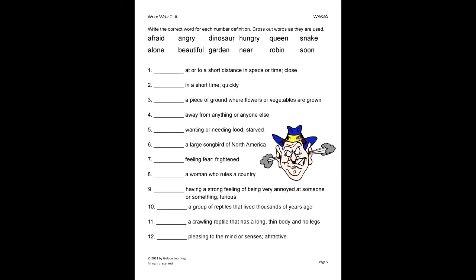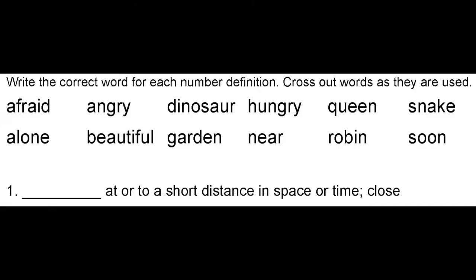On this activity, the student will write the correct word for each number definition. Cross out words as they are used. Let's look at number one. First, read the given definition: at or to a short distance in space or time, close. From reading our definitions page in the front, we know near matches this definition. So we cross out near and neatly write it on the line.